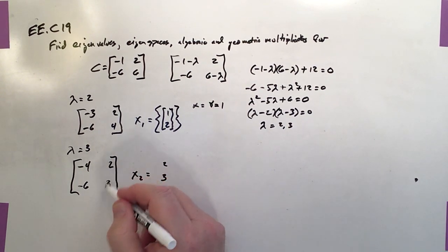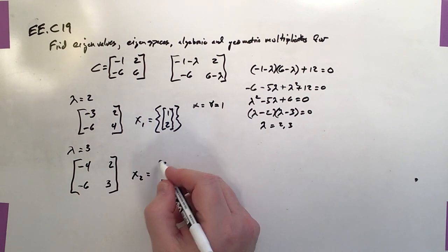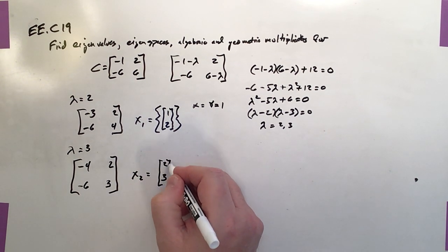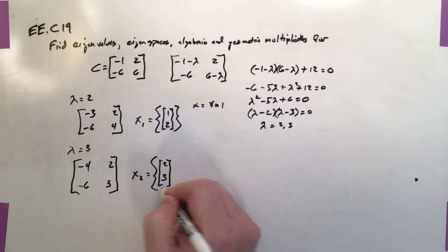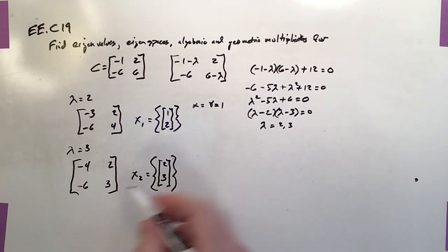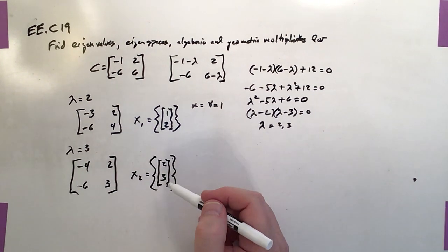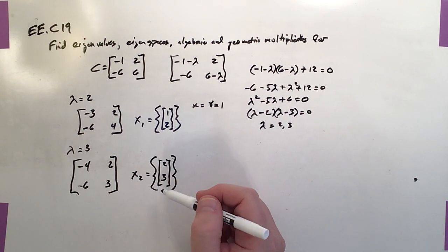And that will then produce everything in this particular vector set. So this is the complete set. This is the entirety of the eigenspace for this eigenvalue. So this is actually the eigenvector for it.